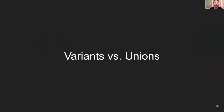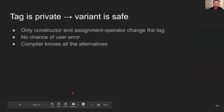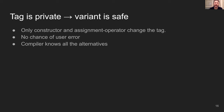Now let's talk a little deeper about variants versus unions. I assume everyone knows what unions are and remembers the memory layout. The basic difference is the tag. The tag is private in a variant, and the fact that it's private means the variant is safe. The only way to change the tag is using a constructor or assignment operator — there's no other way to change the tag, which means I cannot make a mistake.